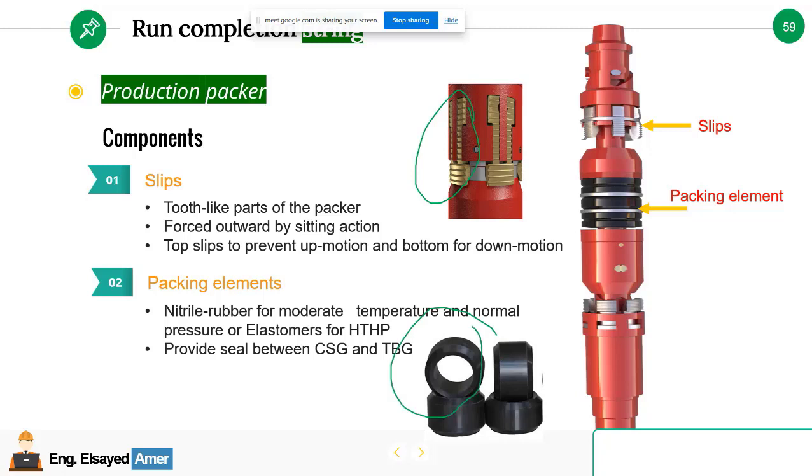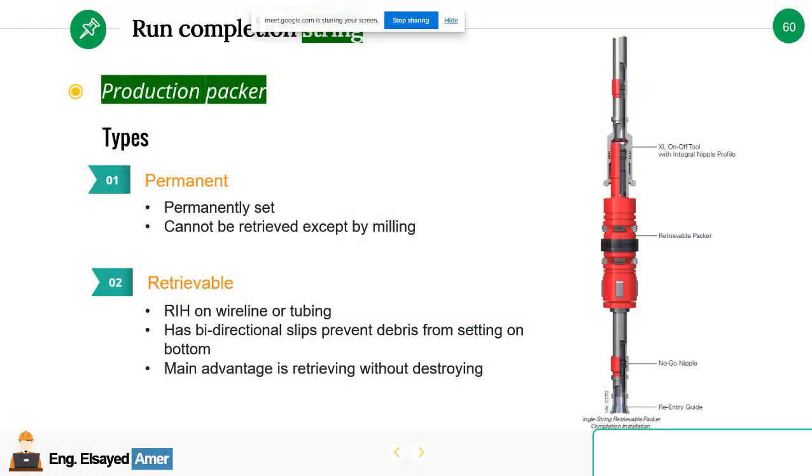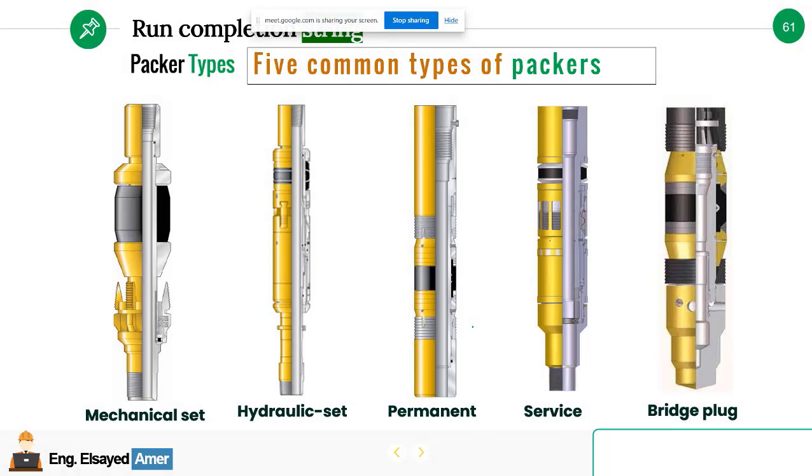And this is the packing element, which can be redressed or repaired at the surface once it's run in hole or retrieved. We say we have permanent and retrievable packers. What's the difference between both? The permanent one, you have to crush it in order to dismantle it. Perfect.